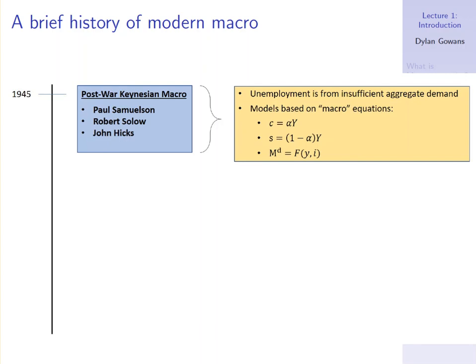The other part is that their models were based on macro equations — equations that linked macro variables to macro variables. For example, the Keynesian consumption function says that consumption is some fraction alpha of total income y. Or saving is the opposite fraction of total income. Or money demand is some equation that links income and the interest rate i. But notice these are what we would call reduced forms. This alpha isn't coming from any decisions by individual agents — we're just saying consumption is some fraction of income. We're not building this from the ground up, not from the decisions of individual agents.